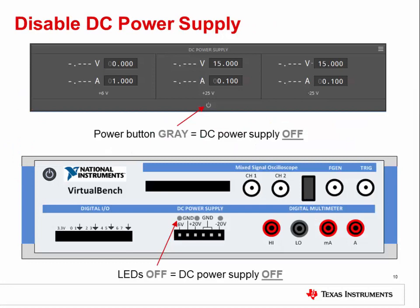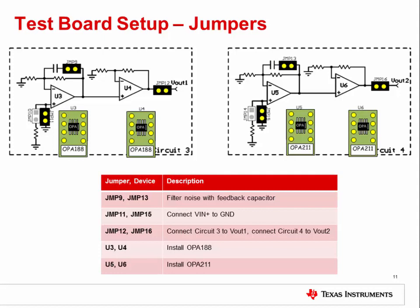Make sure to disable the DC power supply before setting up the test PCB. In the VirtualBench software, click the Power button in the DC power supply area to turn off the power. Check the front panel of the VirtualBench unit to make sure the LEDs are off. Also make sure that the function generator is off. To prepare the test board for measurement, install the jumpers and devices on circuit 3 and circuit 4 as shown here. On circuit 3, install JMP9, JMP11, and JMP12, as well as the OPA188 in sockets U3 and U4. On circuit 4, install JMP13, JMP15, and JMP16, as well as the OPA211 in sockets U5 and U6.